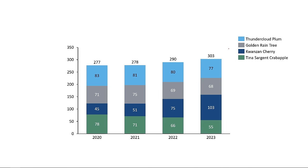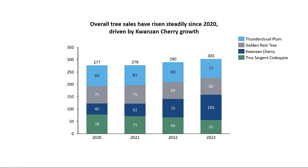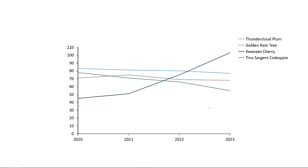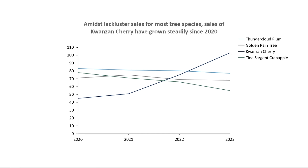But then if you put the data in a stacked column chart, the emphasis shifts to the total of each column — combining all the species together. A message for a chart like this might be: overall tree sales have risen steadily since 2020, driven by Kwanzan Cherry growth. Then put this data in a line chart, and the message changes entirely — you can see Kwanzan Cherry increasing over time while other trees are flat to declining. This is all the same data, but the message changes ever so subtly with each chart type.